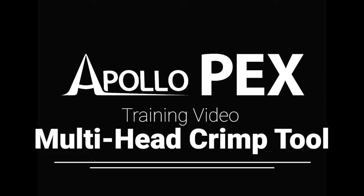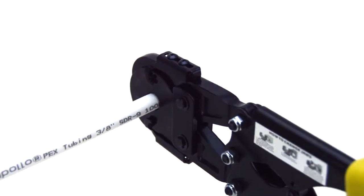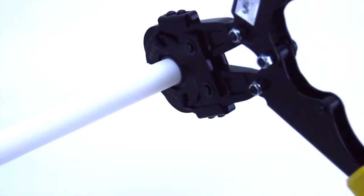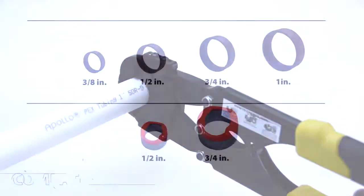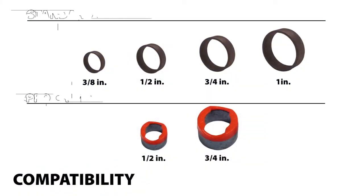Hello and welcome to Apollo training videos. The Apollo PEX multi-head crimp tool is a user-friendly and versatile tool designed to make secure connections between PEX pipe and fittings using standard copper crimps or Apollo PEX pro crimps.